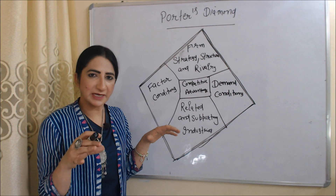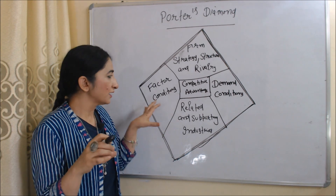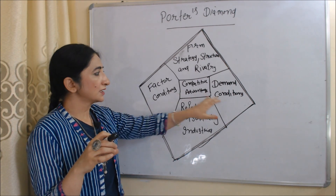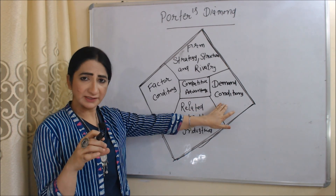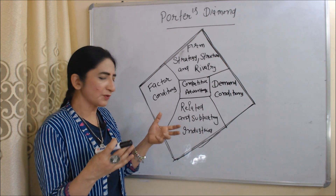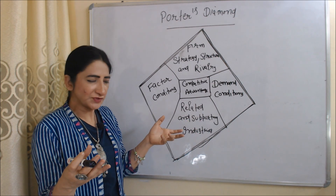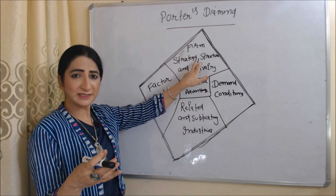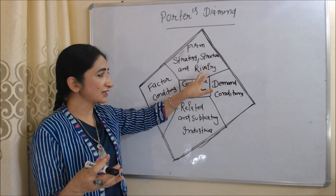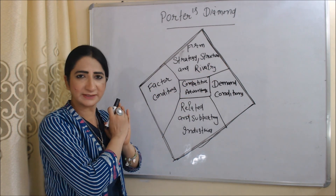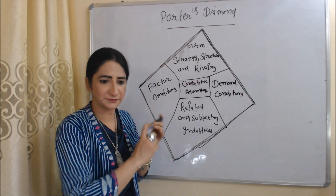Porter's Diamond consists of four attributes: factor conditions, demand condition, related and supporting industries, and firm strategy, structure and rivalry. Let's discuss each one by one.